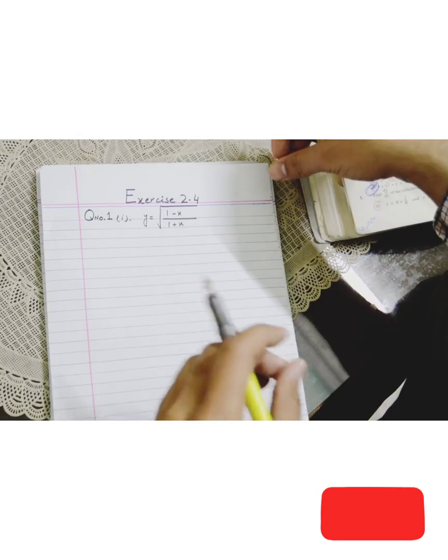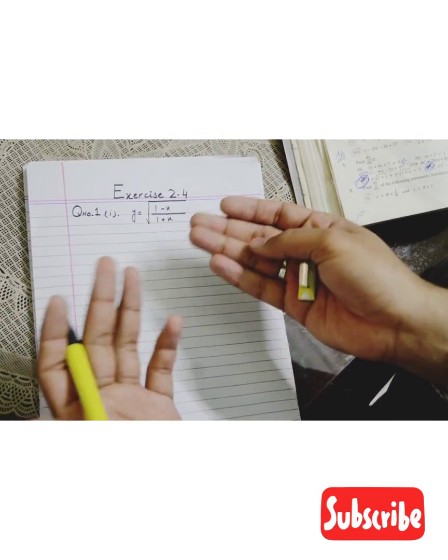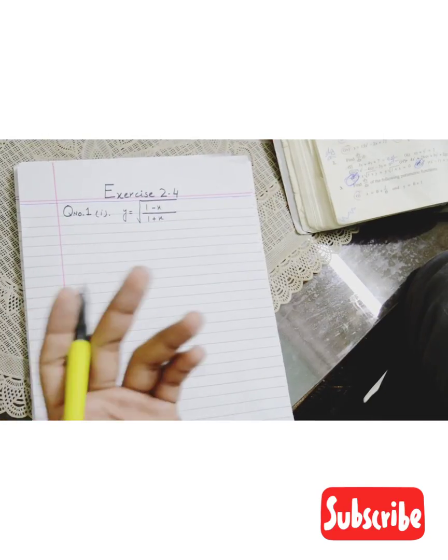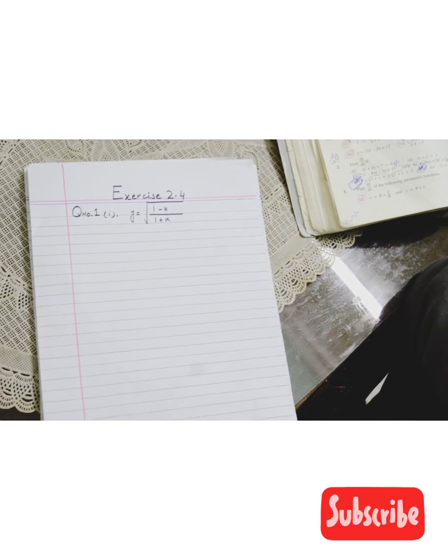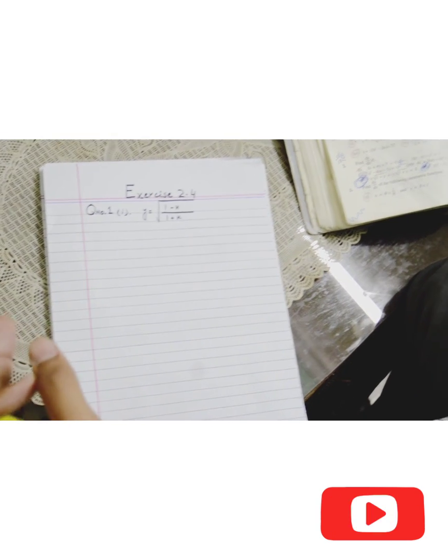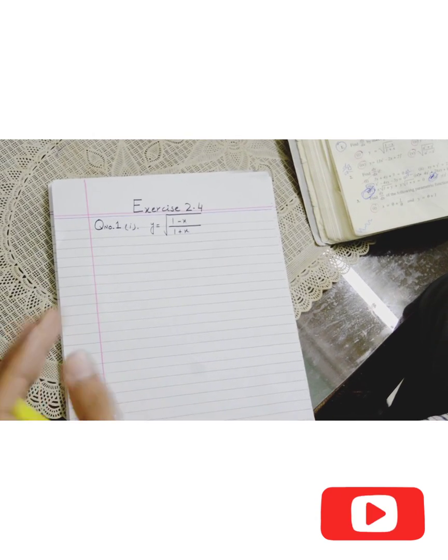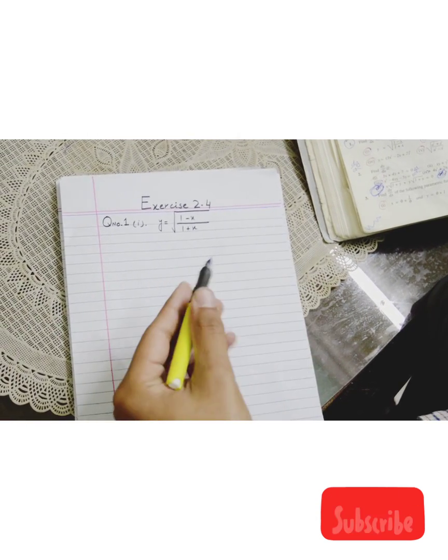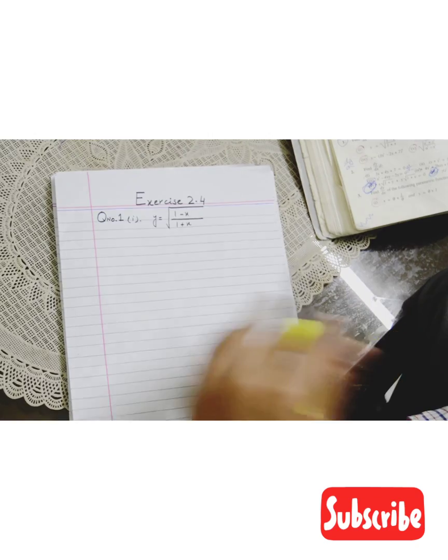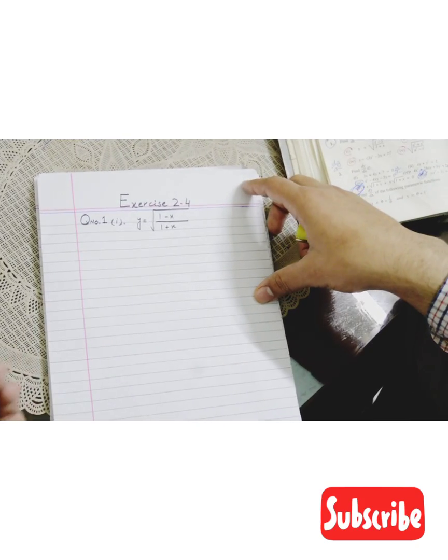The first question is in this way. We will try to make a question. We will do Exercise 2.3. 2.3 is the basic exercise. If it is done on your fingertips, the whole chapter will be done. There will be a little change.